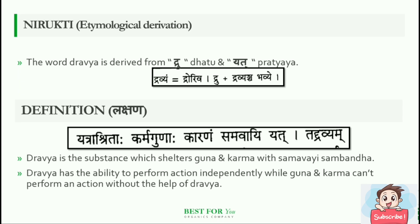Nirukti — etymological derivation. The word Dravya is derived from the Dru dhatu and Yath pratyaya.